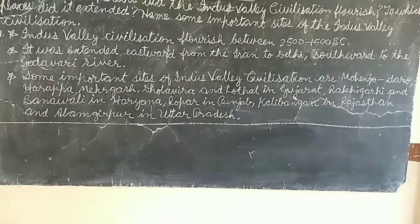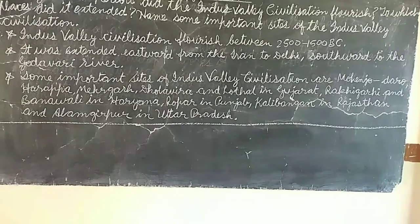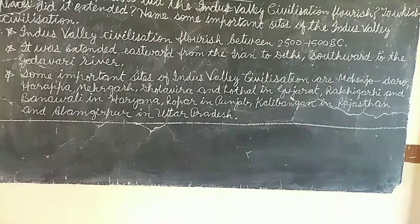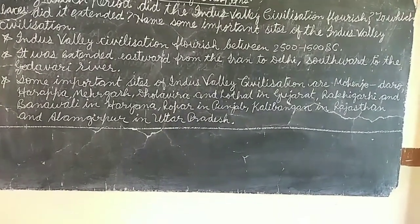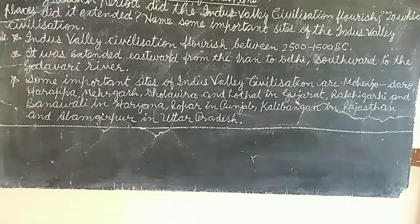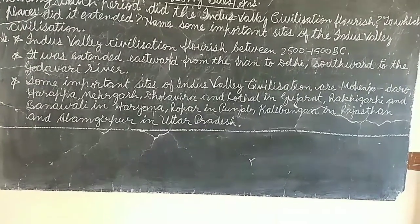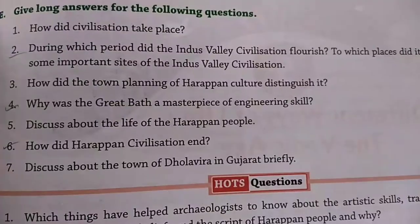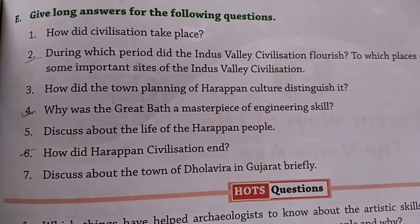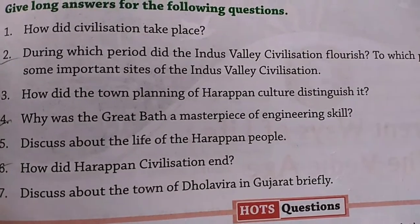Some important sites of the Indus Valley civilization are Mohenjo-daro, Harappa, Mehrgarh, Dholavira and Lothal in Gujarat, Rakhigarhi and Banawali in Haryana, Ropar in Punjab, Kalibangan in Rajasthan, and Alamgirpur in Uttar Pradesh.